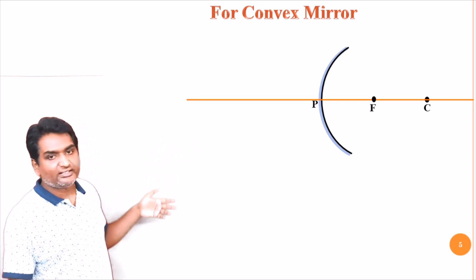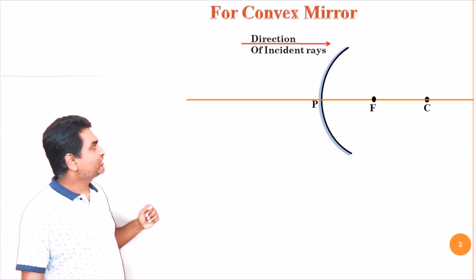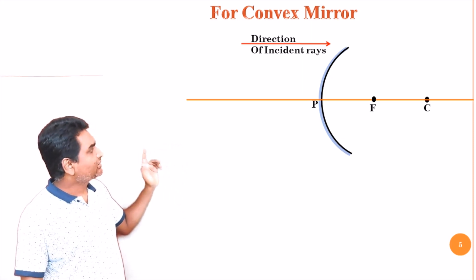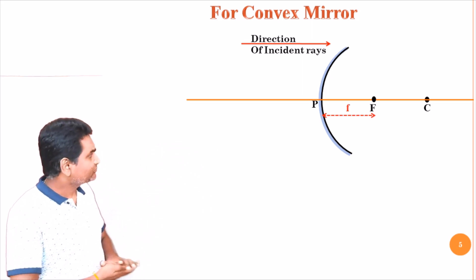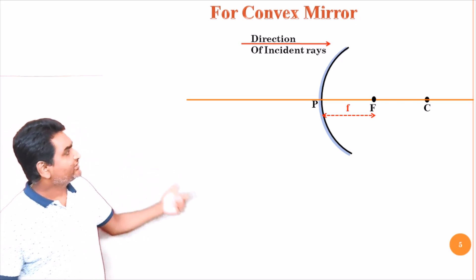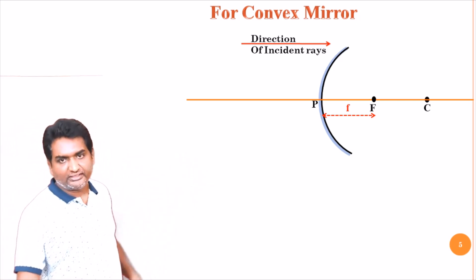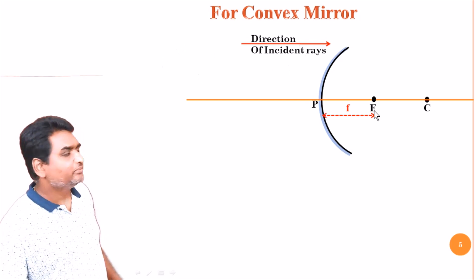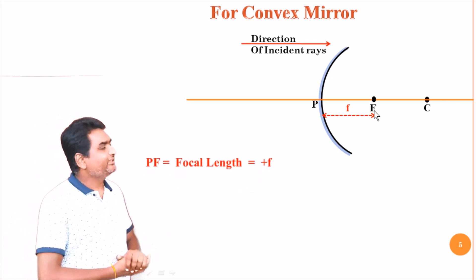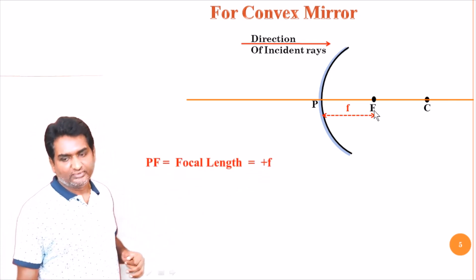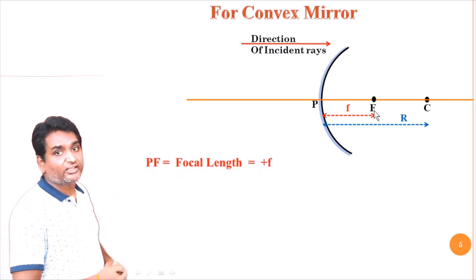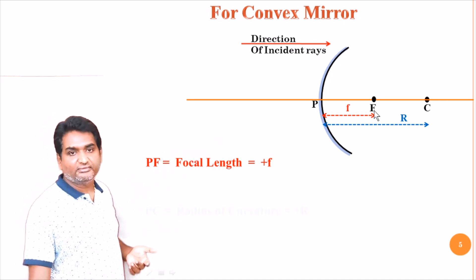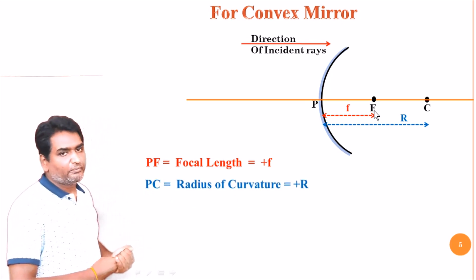Let us see for convex mirrors. Consider a convex mirror here. Light rays are incident in this particular direction. The focal length is the distance from pole to focal point. This distance is measured along the direction of the incident ray, so the focal length in this case is positive. Similarly, the radius of curvature — the distance from the pole to center of curvature — is also measured along the direction of the incident ray, so it is also positive.